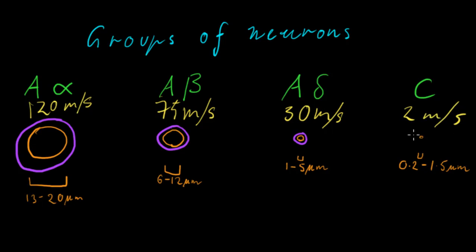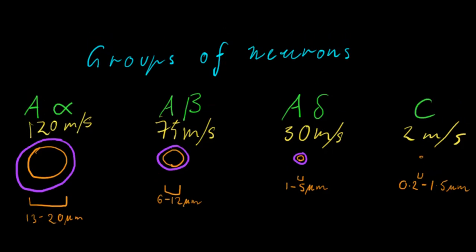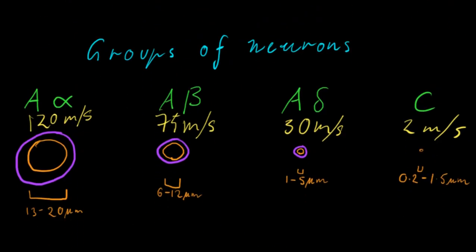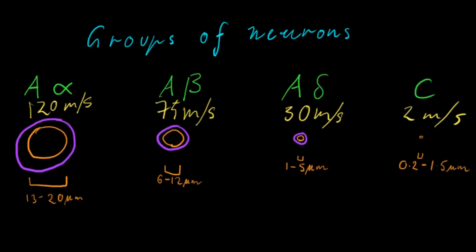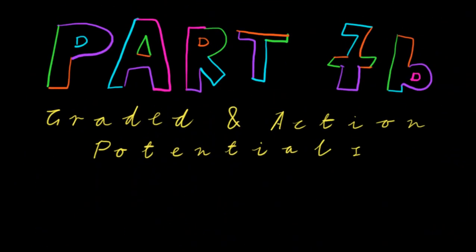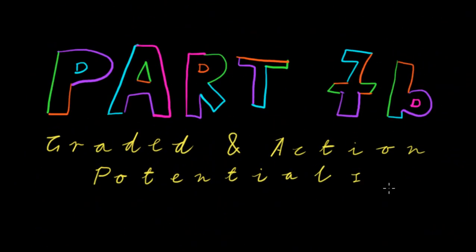So I just wanted to mention this so that you could appreciate the relationship not only between myelination but also diameter of axons and of course the speed of their conductance. Alright, this has been part 7b, graded and action potentials.